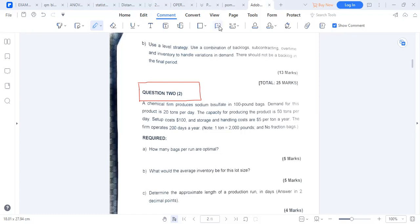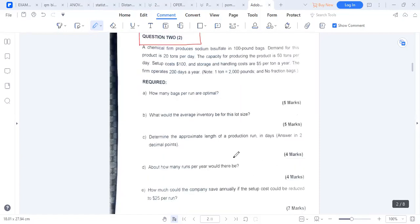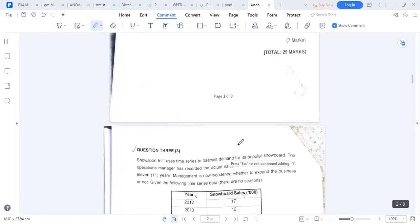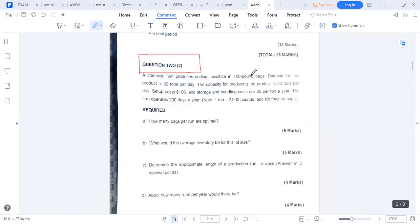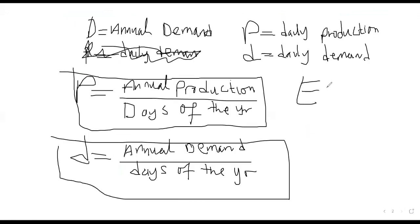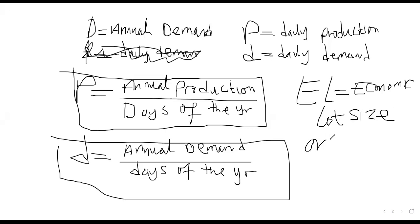Let us get into the length of production. I want to explain everything involved in the production model. The Economic Load Size — ELS — is also called Economic Production Size. ELS or Economic Production Size is represented by Q.